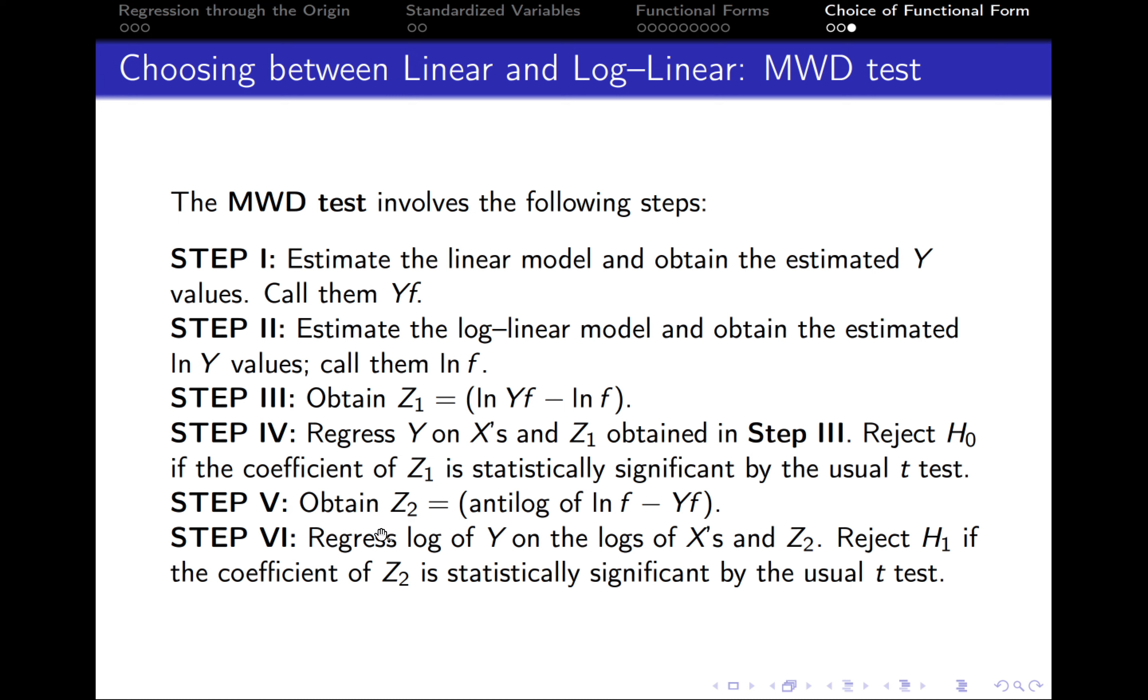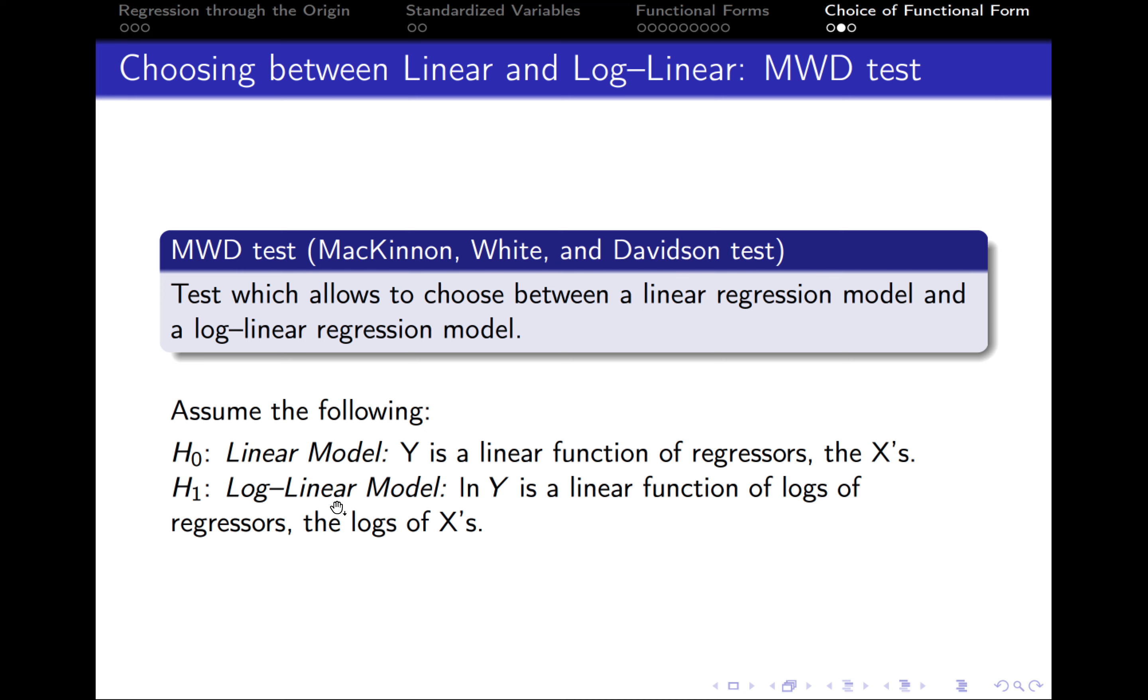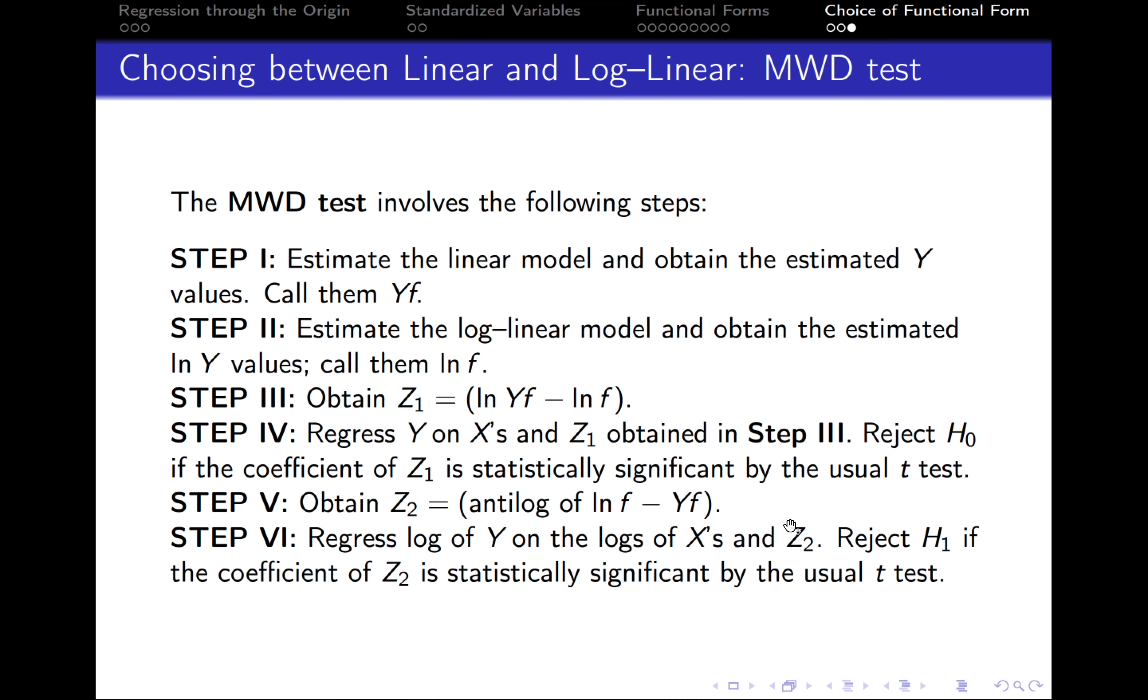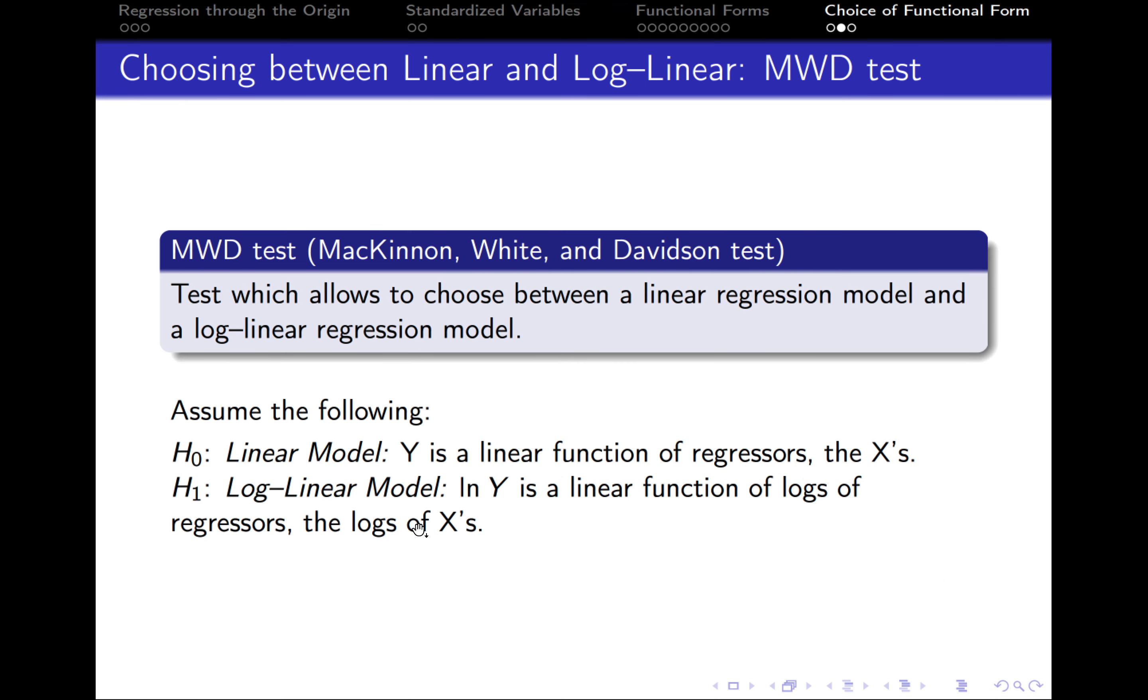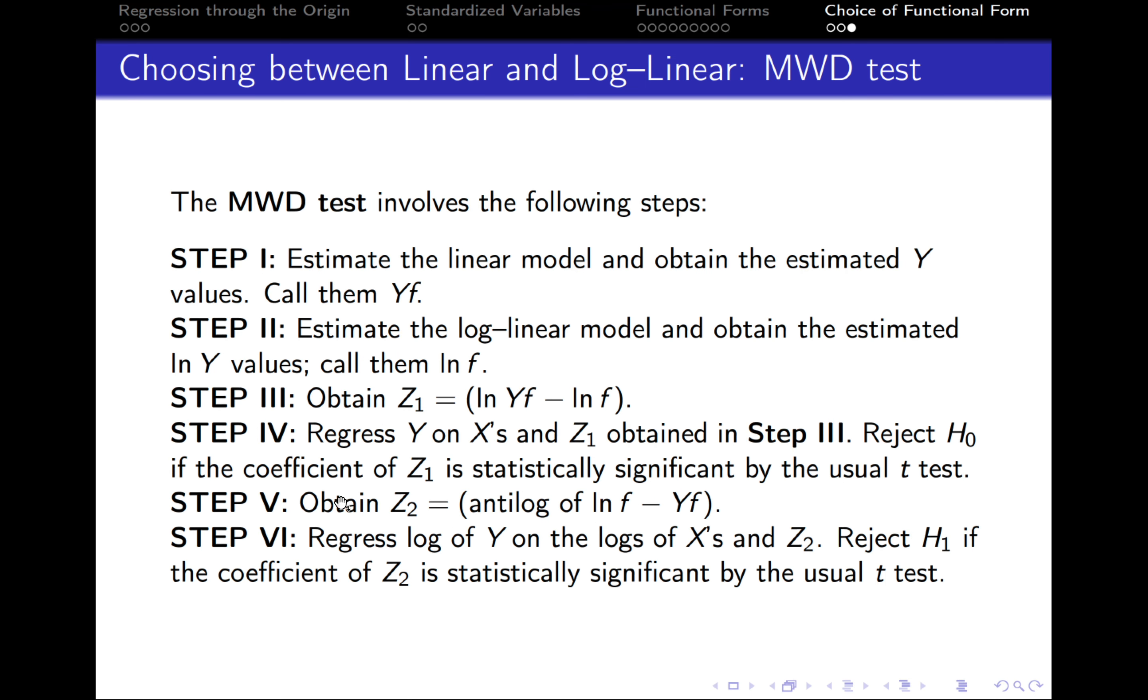After we've done this, we need to regress the natural logarithm of Y on the natural logarithms of X's. So we run the second model, the log-linear model, and in addition we include Z2 variable. We reject the null hypothesis that the log-linear model is the correct one if the coefficient of Z2 is statistically significant.